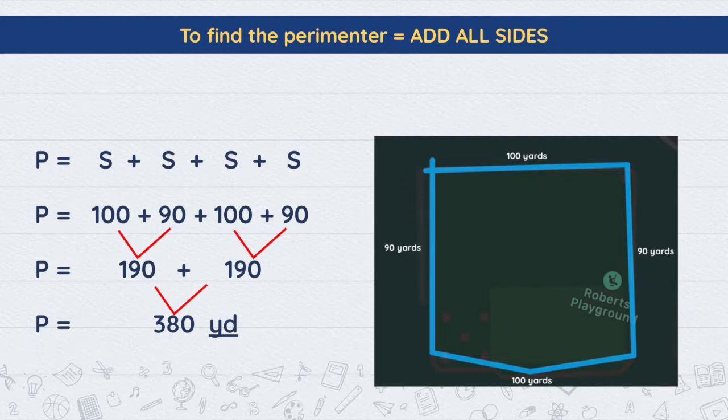You see that I put my label right there. I know the units — when I look at my figure, I have the units. I measured the field in yards, so I should be using the word 'yards' when I find the perimeter.